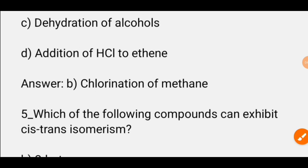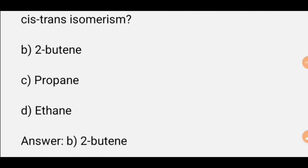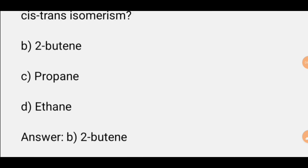MCQ number five: Which of the following compounds can exhibit cis-trans isomerism? This is important to study from first and second year. Options are 2-butene, propane, and ethane. The correct answer is option B, 2-butene.